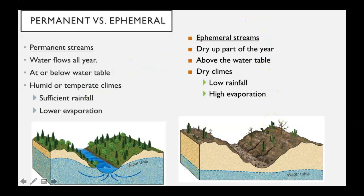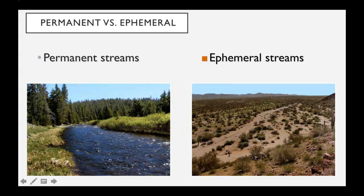Ephemeral streams are more what we have west of the Mississippi, and these are going to dry up for part of the year. The channel sits above the water table within the unsaturated zone, so the stream is not gaining water from the aquifer below it. There is a lower rainfall amount and higher evaporation rates west of the Mississippi, though these are found all over the world. A permanent stream looks like this mountain stream on the left with good water flow, while an ephemeral stream on the right looks like a dry wash — if it rains, that would fill up with water.